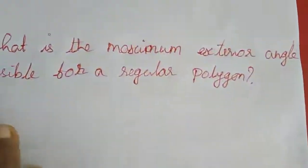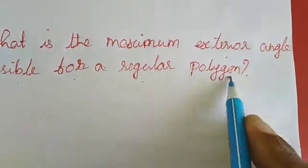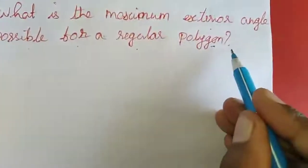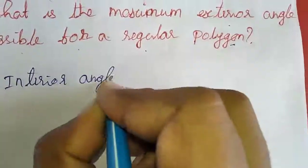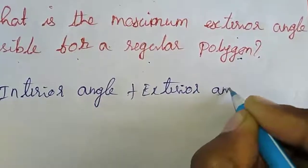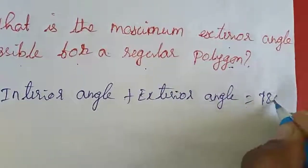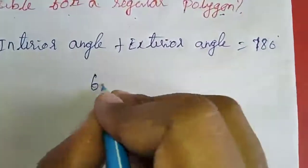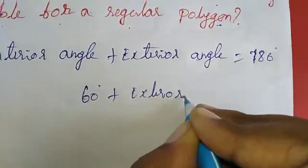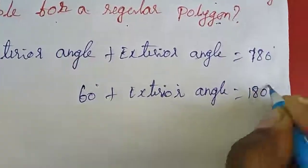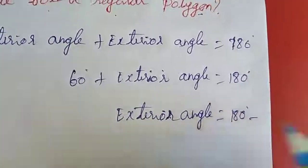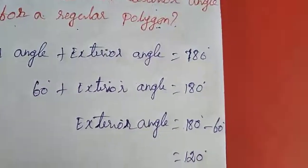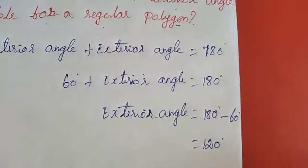Part B: what is the maximum exterior angle possible for a regular polygon? We already know the minimum interior angle is 60 degrees. Using interior angle plus exterior angle equals 180 degrees: 60 plus exterior angle equals 180, so exterior angle equals 180 minus 60 equals 120 degrees. Therefore the maximum exterior angle possible for a regular polygon is 120 degrees.